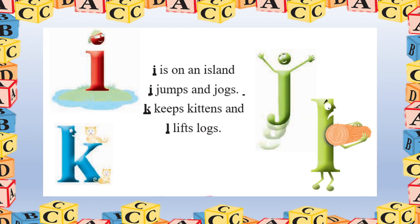I is on an island. J jumps and jogs. K keeps kittens and L lifts logs. Repeat with me now — I is on an island. See, when we say 'island' we will not pronounce the 'S' there, okay? I is on an island. J jumps and jogs. K keeps kittens and L lifts logs. Very good!